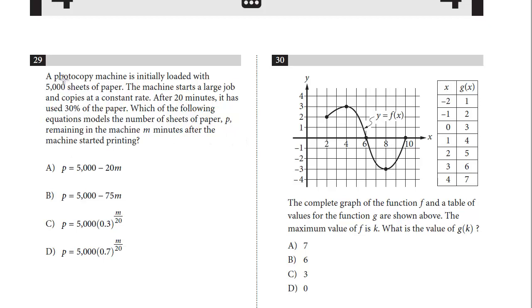All right, so it starts with 5,000 and it copies at a constant rate. This is really key. Constant rate—you always want to ask yourself, is this linear, the equation we have to form, or is it exponential? Constant rate we know is linear. We want an equation for the number of sheets of paper P in minutes after it started. If it's constant, it's linear. If you look at the choices, we know it has to be A or B. These are both exponential.